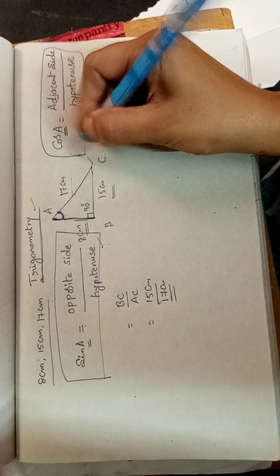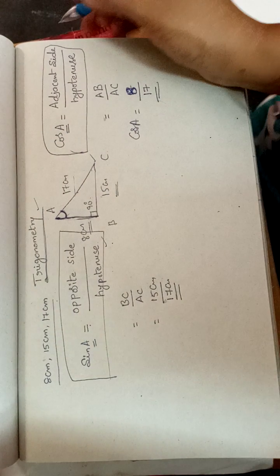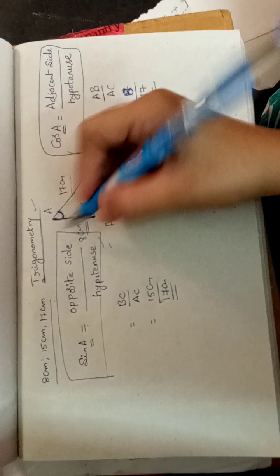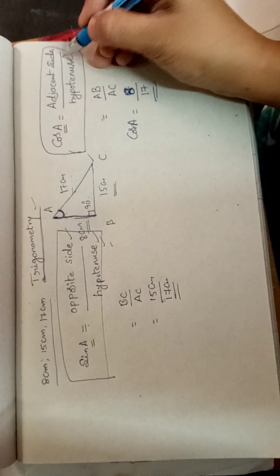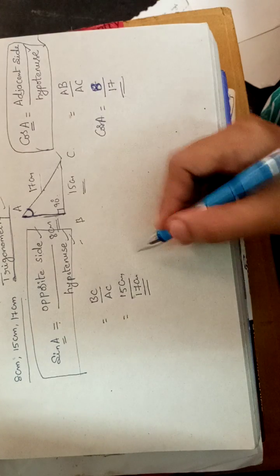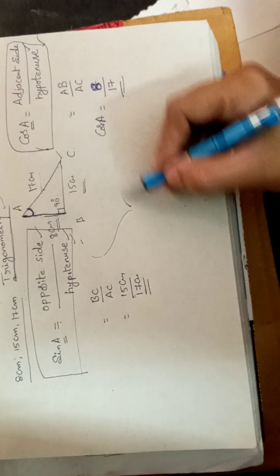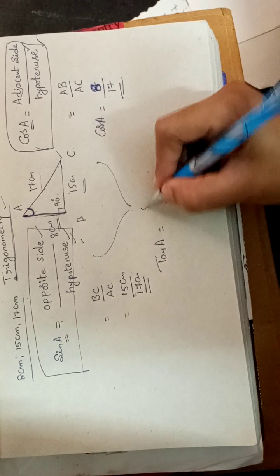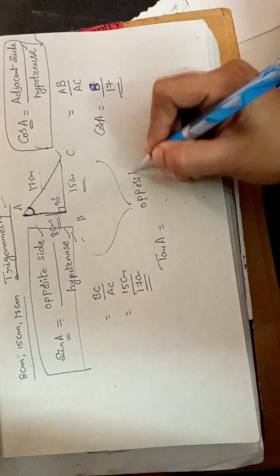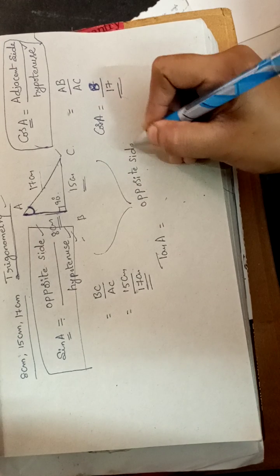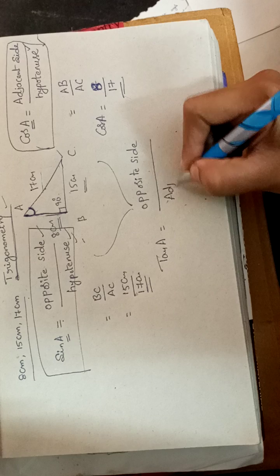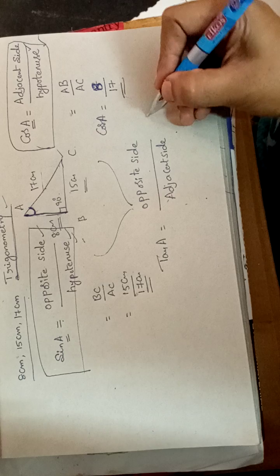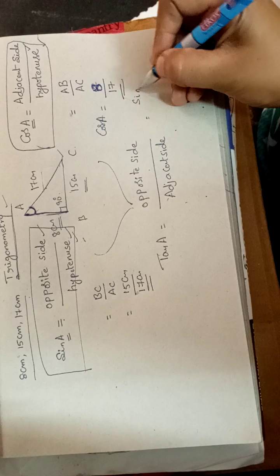These are very fundamental formulas in trigonometry. For sin A, the formula is opposite side by hypotenuse. For cos A, it is adjacent side by hypotenuse. From these two formulas we can derive tan A, which is opposite side by adjacent side. We can also write tan A as sin A by cos A.